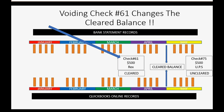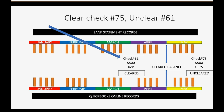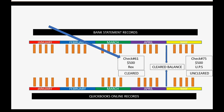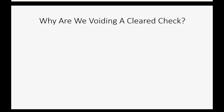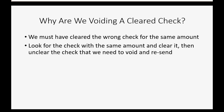If you void that check, you are voiding something that's part of the cleared balance, which you're not supposed to do. That's how you know you have this mistake. The solution is to clear check 75 and unclear check 61. Once you've found the transaction with the same money amount, you can do this in the register window as shown in a previous video. Find the check with the same money amount, clear it, unclear the wrong check, then void the truly uncleared check and resend it without messing up the cleared balance.